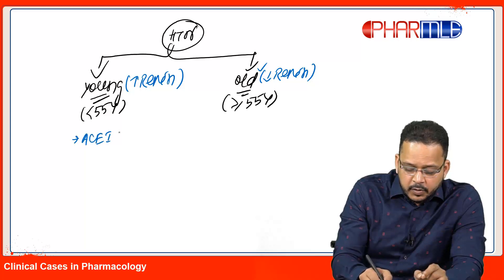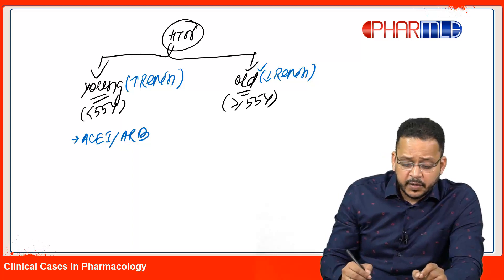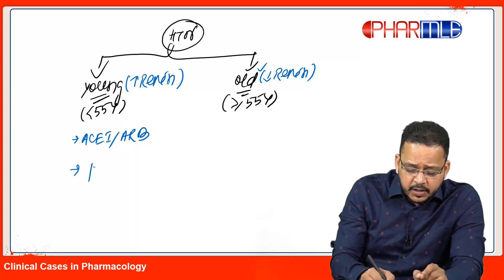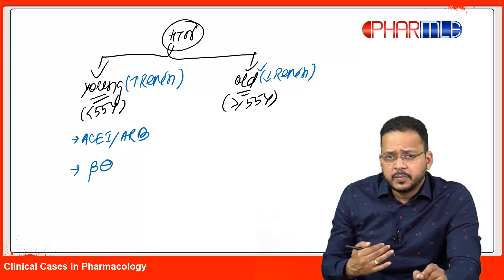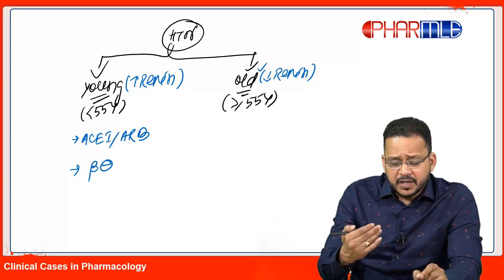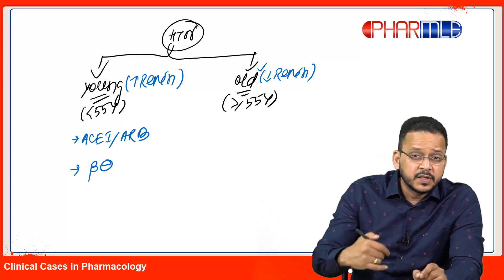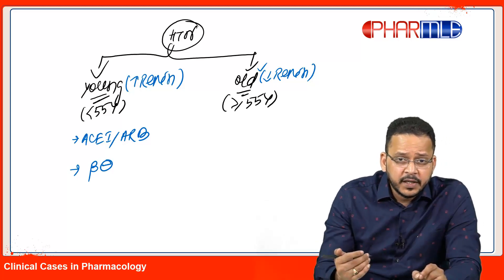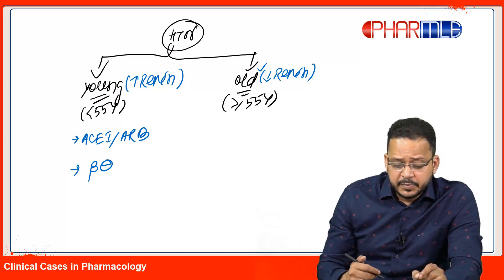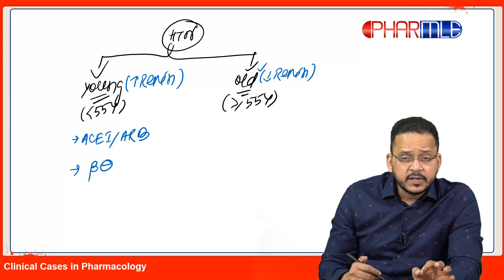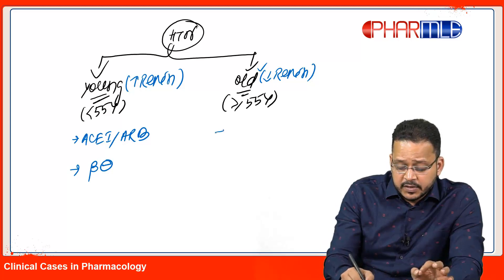...which are acting upon your RAS, like ACE inhibitors or ARBs. Which is the other class of drug apart from RAS which can also decrease renin? That is beta blockers, because beta-1 receptors are present in the JG cells of kidney. So beta blockers, ACE inhibitors, ARBs - these are the drugs that can decrease renin.